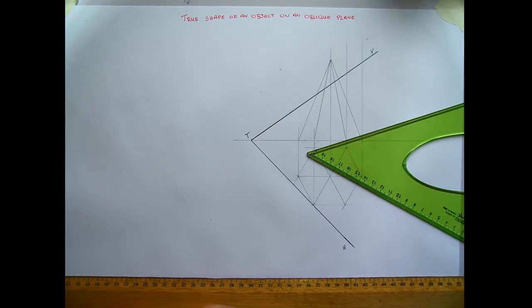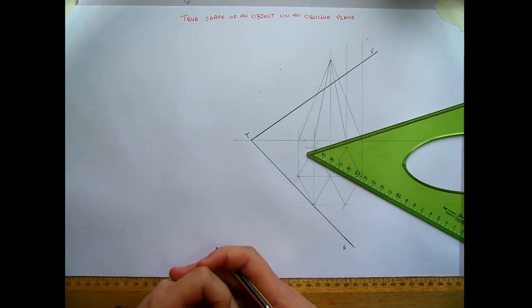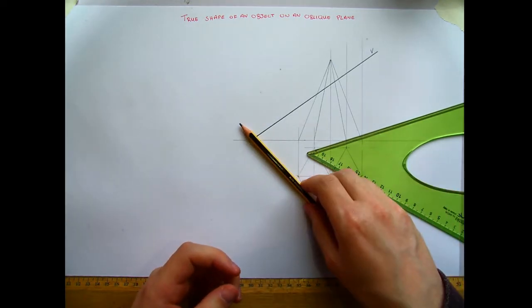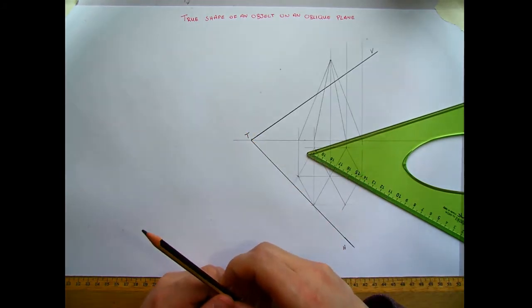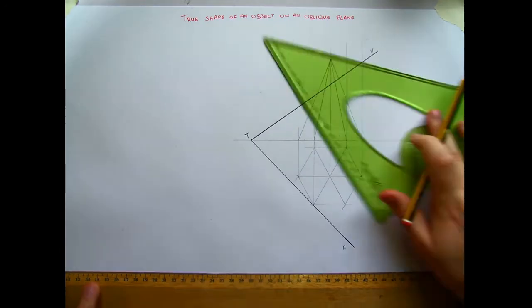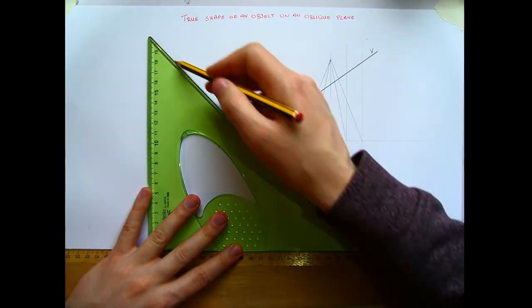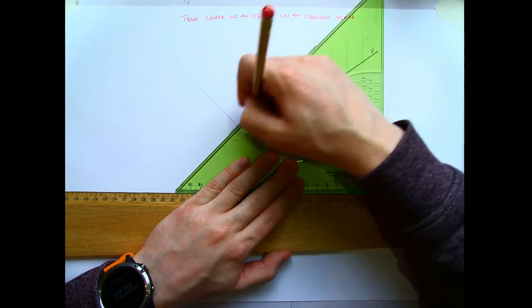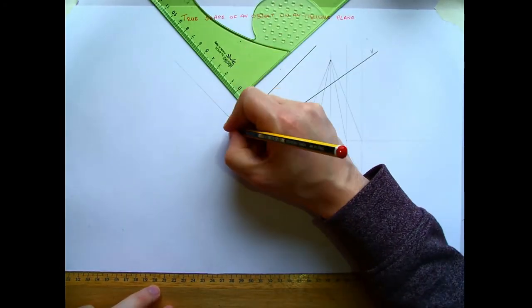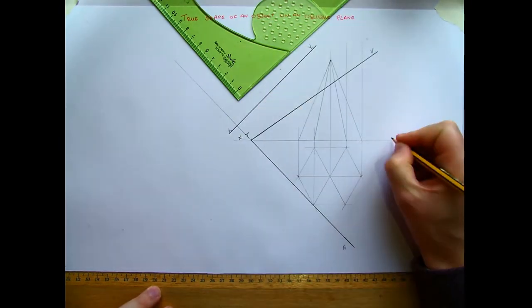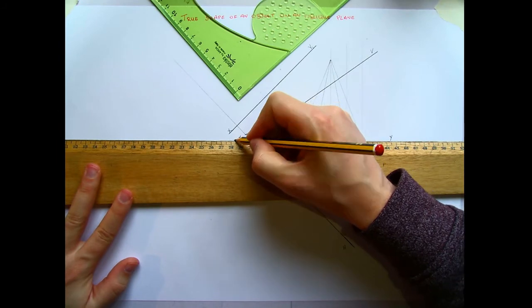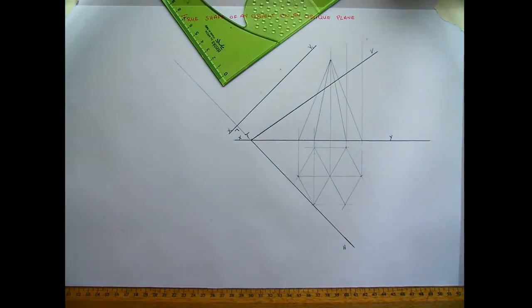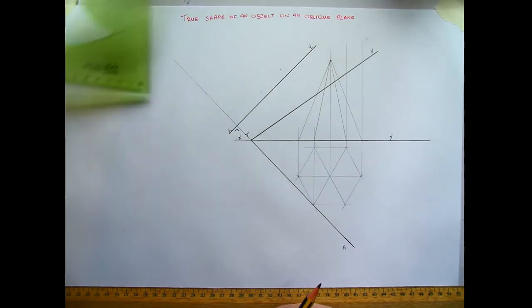What we need to do now is we need to draw an auxiliary view, because before we can find the true shape, we need to see what it looks like when it's actually cut. So I'm going to do what we normally do. I'm going to look along the horizontal trace and find an edge view of the oblique plane. So I'll be looking along this way, so I'm going to project my lines along my horizontal trace. I'm going to put in an X1Y1 line that is perpendicular. It's really important that it's perpendicular to the horizontal trace. So X1Y1, and this has to be at 90 degrees.